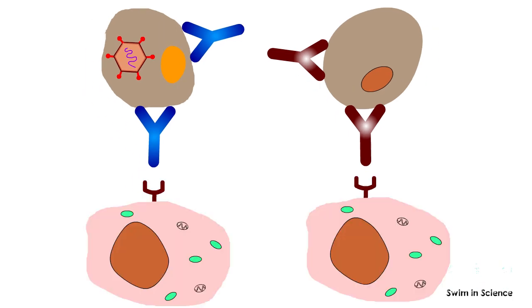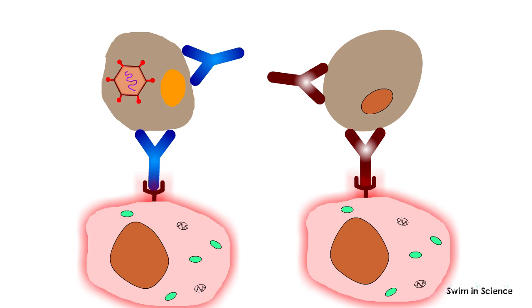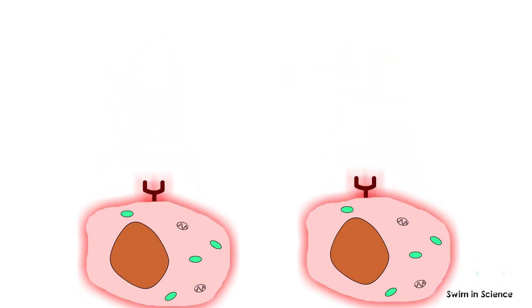Effector cells such as natural killer cells recognize the FC portion of the antibody and get activated. The activated natural killer cells release cytotoxic granules such as perforin and granzymes into the target cell, which triggers apoptosis, that is programmed cell death of the target cell.